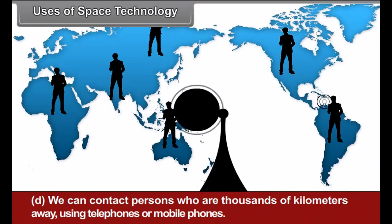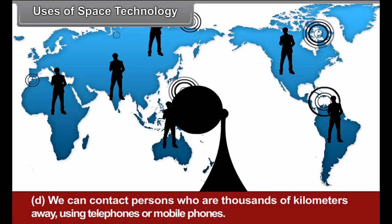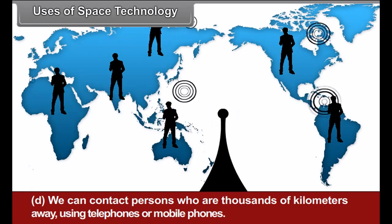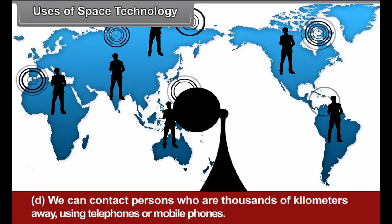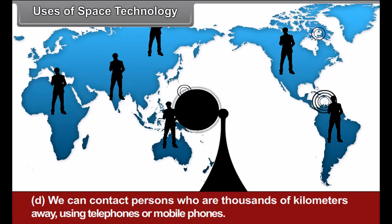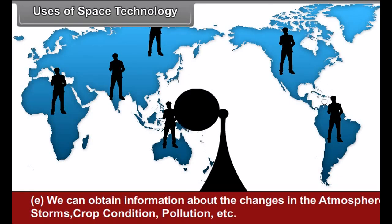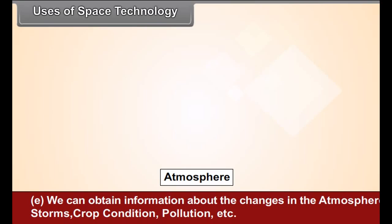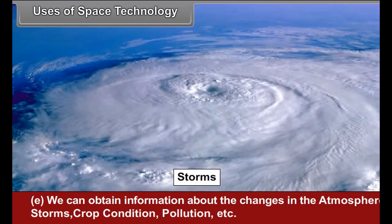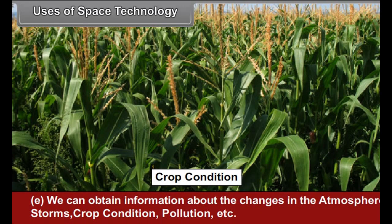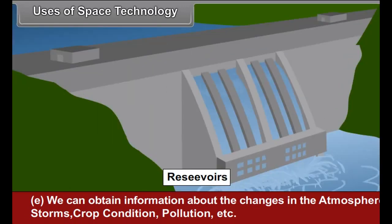D. We can contact persons who are thousands of kilometers away using telephones or mobile phones. E. We can obtain information about the changes in the atmosphere, storms, crop conditions, reservoirs, pollution, and more.